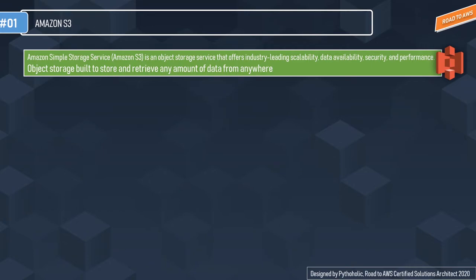Amazon Simple Storage Service, or Amazon S3, is an object storage service that offers industry-leading scalability, data availability, security, and performance. I would like to call this a data store of object-type data — in a way it's a type of database, but for objects. AWS S3 is basically an object storage built to store and retrieve any amount of data from anywhere, meaning it can be retrieved by anyone from any part of the world who has sufficient permissions to do so.